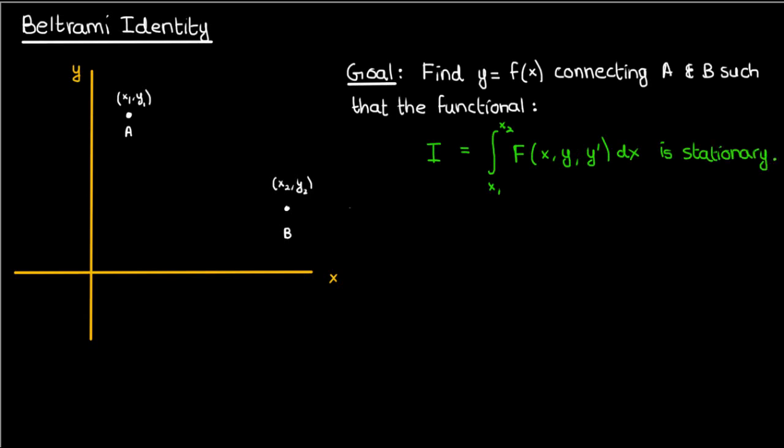We already know from the previous video that we can find this function using the Euler-Lagrange equation, which is just a differential equation that looks like this: the partial of F with respect to y minus the derivative of partial F partial y prime with respect to x equals 0.